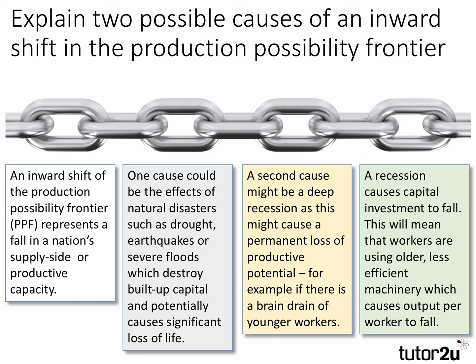Natural disasters are external natural shocks which hit an economy — particularly vulnerable developing or emerging countries whose physical infrastructure is susceptible and fragile to extreme climatic conditions. The second cause is really about the impact of a recession causing a brain drain and a fall in capital investment, which links to efficiency, therefore causing a fall in productivity, which causes the PPF to shift inwards.